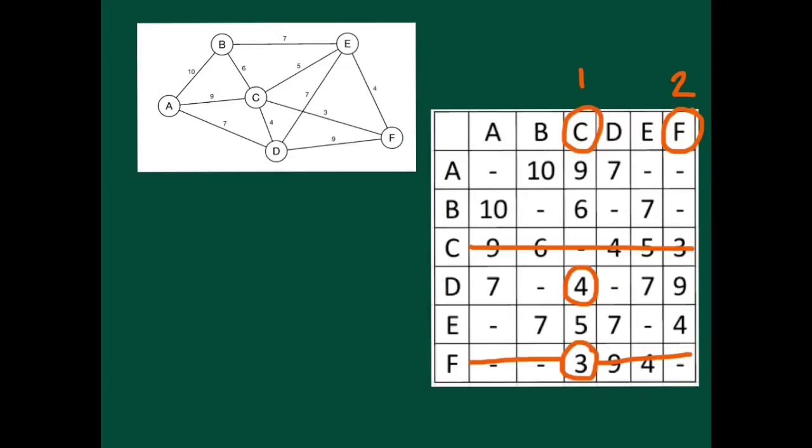That's in E, so I cross out the E row, circle E, that was the fourth one I chose. I'm now looking down the columns C, D and F to find the minimum weight one, that's this 4 here.